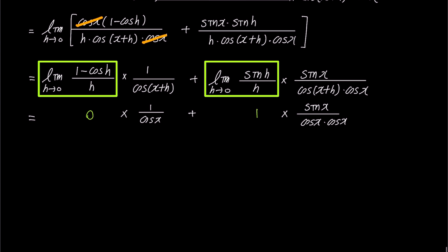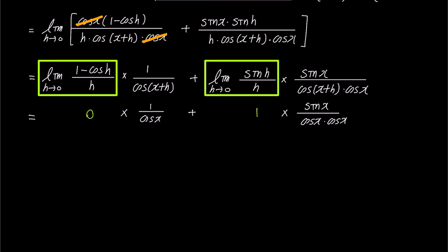In the end, only the second fraction remains, resulting in sine x over cosine x times cosine x, which can be expressed as 1 over cosine x times sine x over cosine x. Since 1 over cosine is equivalent to secant x, the final expression simplifies to secant x times tangent x.